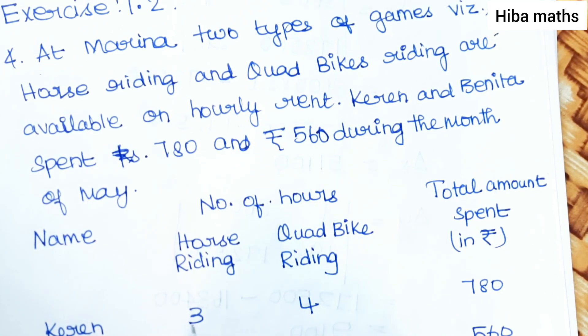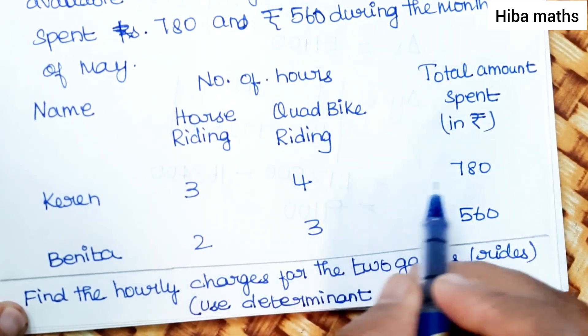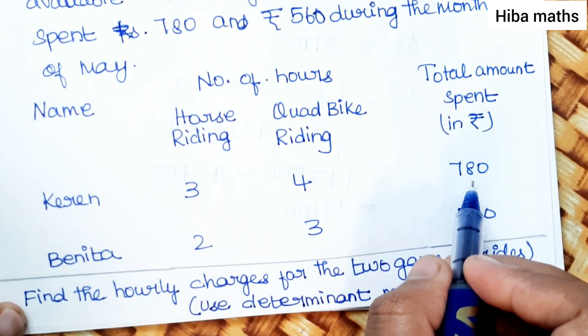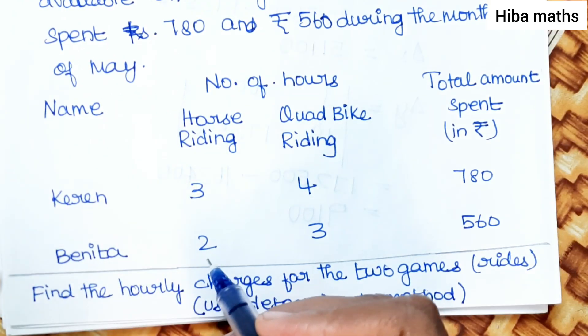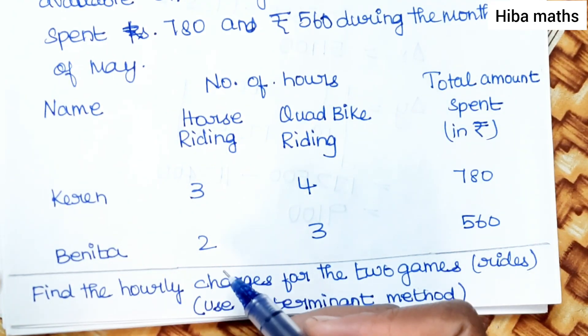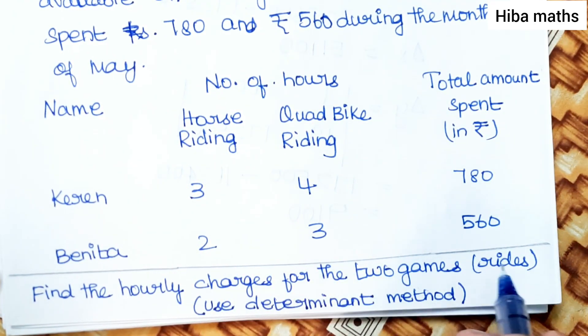Karen has 3 horse riding and 4 quad bike riding for 780 rupees. Benita has 2 horse riding and 3 quad bike riding for 560 rupees. Find the hourly charges for the two games using the determinant method.